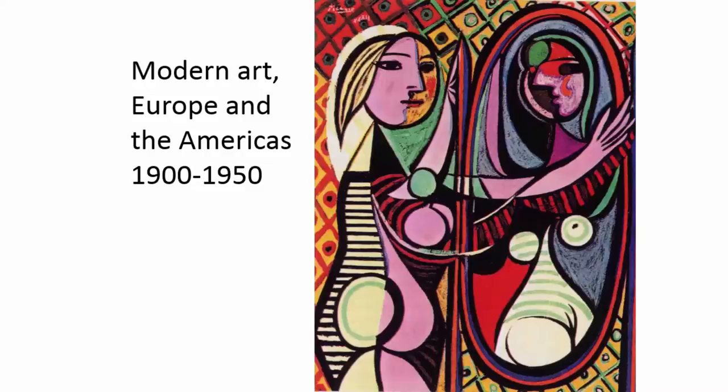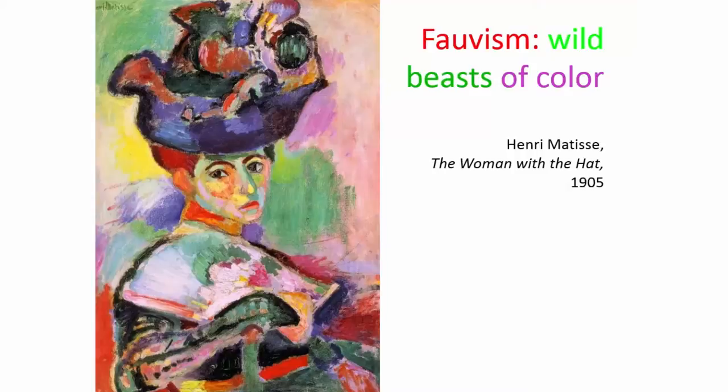The first in the series of video lectures is an overview of art in Europe and the Americas from 1900 to about 1950. And we'll start with fauvism. Fauves were wild beasts of colour. Fauvists were a loosely connected group that didn't have that many exhibitions, but they were influential for modernism and contemporary art in that they started to break away from the Impressionist tradition.